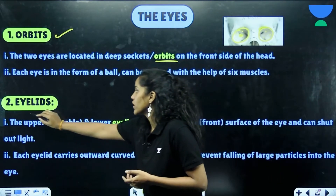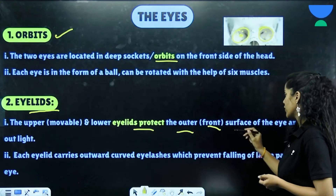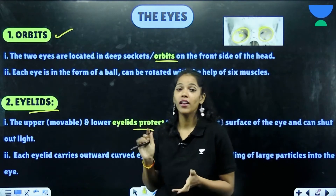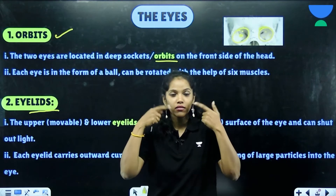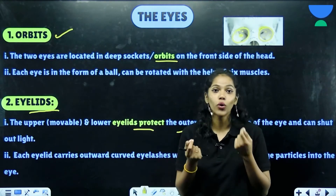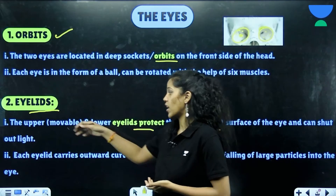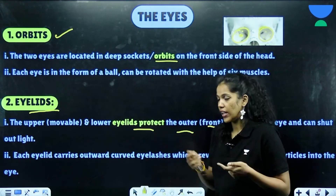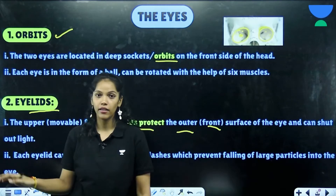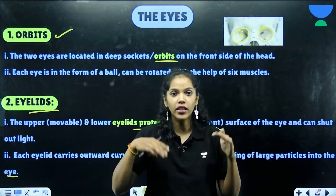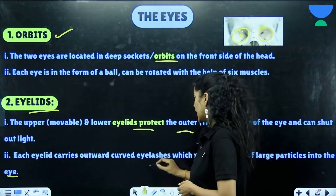The upper eyelids close and open while the lower ones are immovable. They help in protection and can shut out light. Each eyelid carries outward-curved eyelashes which prevent large particles from falling into the eye — they basically act as a thin barrier.